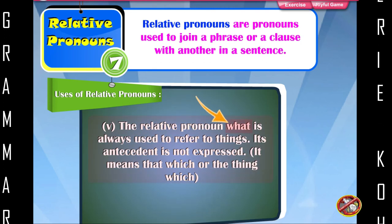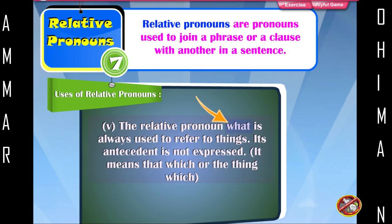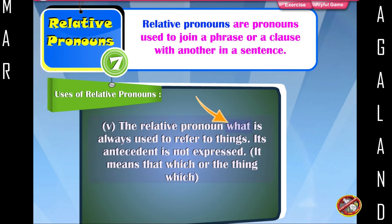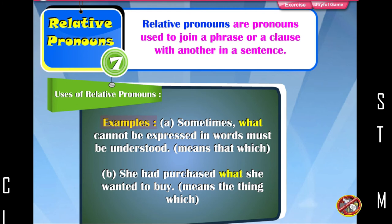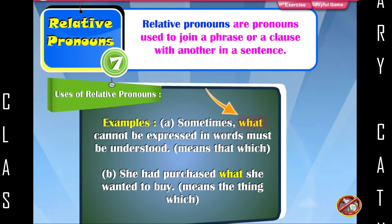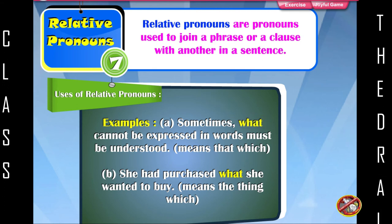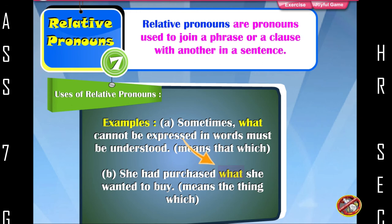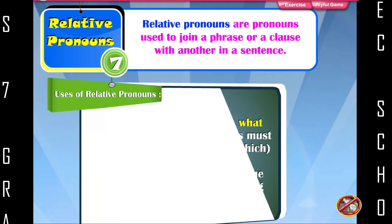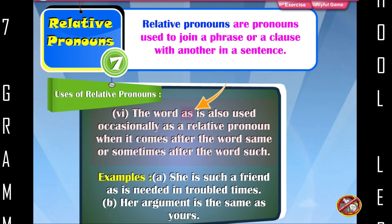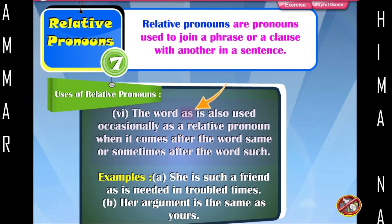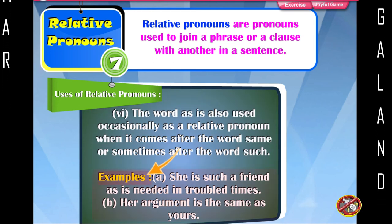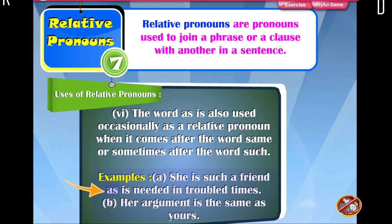The relative pronoun what is always used to refer to things. Its antecedent is not expressed; it means 'that which' or 'the thing which.' Example: Sometimes what cannot be expressed in words must be understood, meaning 'that which.' She had purchased what she wanted to buy, meaning 'the thing which.' The word as is also used occasionally as a relative pronoun after the word same or sometimes after the word such. Examples: She is such a friend as is needed in troubled times. Her argument is the same as yours.